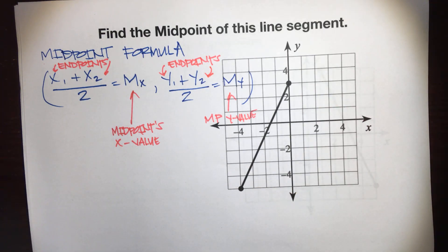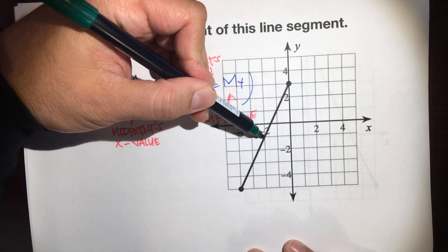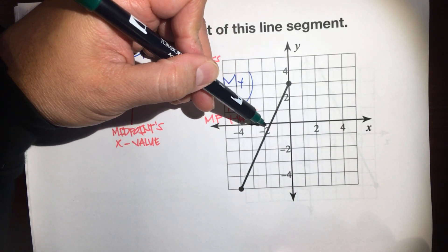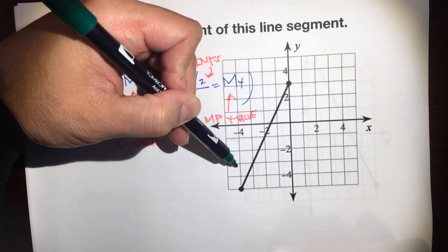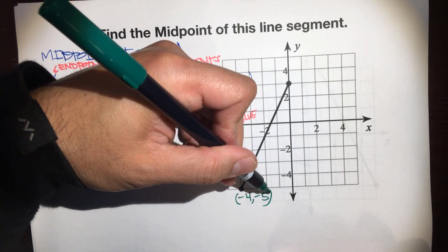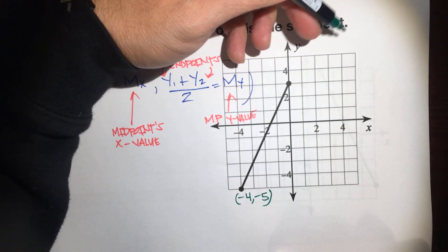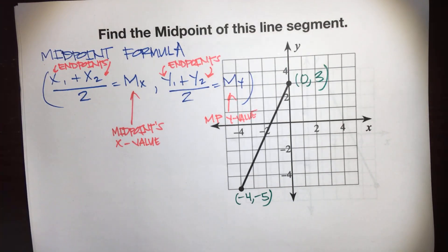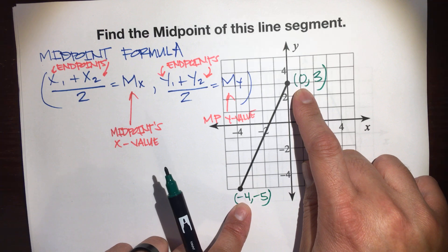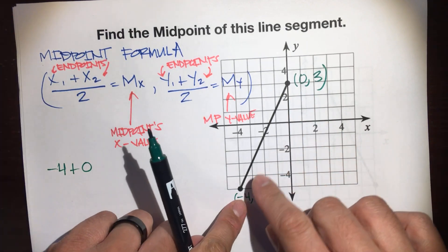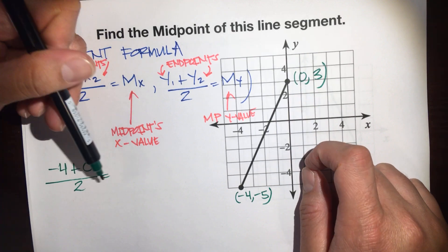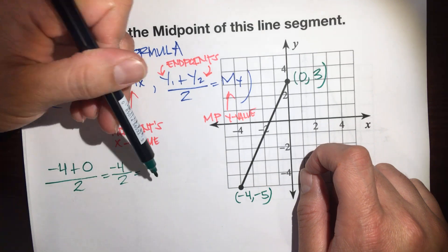Let's do this example and hopefully it'll make sense. We have two endpoints — where is that midpoint, that exact middle spot? The coordinates of the first endpoint are negative 4, negative 5 — here's the x value and here's the y value. The second endpoint is at zero, three. Now we plug this into our formula: we take the x values of the two endpoints — negative 4 plus zero — and average them. Negative 4 plus zero is negative 4, over 2, which is negative 2.